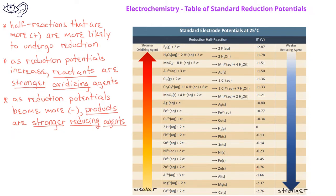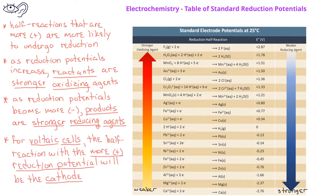Finally, since voltaic cells involve spontaneous reactions, we can identify which of the half-reactions will be the cathode, because the more positive reduction potential will serve as a cathode since that reaction has a greater tendency to undergo reduction.